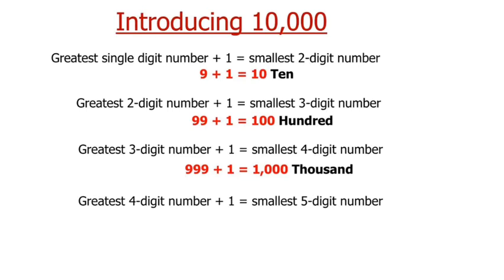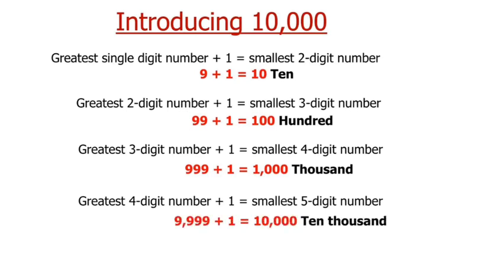Also, greatest 4 digit number plus 1 equals smallest 5 digit number, i.e. 9999 plus 1 equals 10,000.